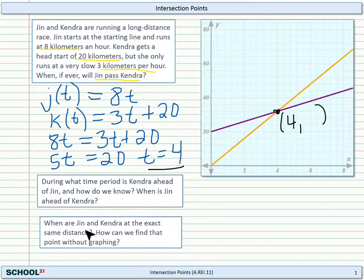Now, the final question here. When are Jin and Kendra at the exact same distance, and how can we find that point without graphing? Remember, we can graph this and it shows us a lot of information, but it was a little bit hard for me a minute ago to figure out exactly what the distance was at that point. So the way that we find that point, when they're at the exact same distance, is to go ahead and find the intersection point by setting the functions equal to each other. And the only thing we need to do to fill in that missing value there is to substitute our value of t equals 4 into either equation.